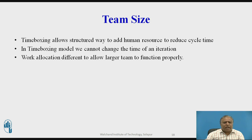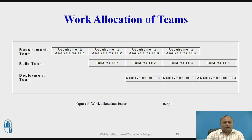In the time boxing model, we cannot change the time of an iteration. Work allocation is designed to allow larger teams to function properly. The requirements team handles requirements analysis for TB1, TB2, TB3, and TB4. After finishing requirements, the build team handles builds one through four. Then deployment follows — after finishing build TB1, deployment TB1 is done, then TB2 and TB3. This is how work allocation across teams is managed.